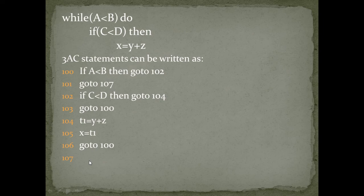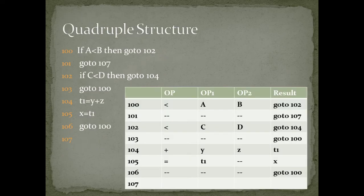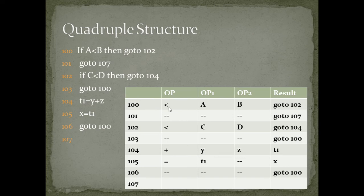Now we will convert these 3AC statements into quadruple structure. The quadruple structure is divided into four columns: operator, operand1, operand2, and result. The memory addresses are the same as the 3AC memory addresses. At address 100, the operator is less than, operand1 is a, and operand2 is b.